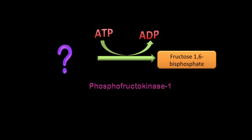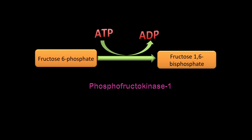PFK1 is the second priming reaction of glycolysis. The hexokinase reaction was the first priming reaction, using one ATP molecule; PFK1 is the second, using the second ATP molecule. So in total, two ATP molecules are consumed in glycolysis. PFK1's product is fructose-1,6-bisphosphate, and the substrate is fructose-6-phosphate.